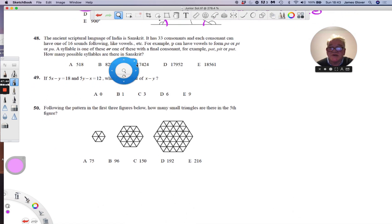Three more questions to go. The ancient scriptural language has 33 consonants. Each consonant can have one of 16 vowels following. A syllable is one of these or one of these with a final consonant. How many possible syllables are there?